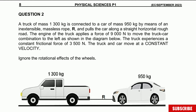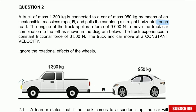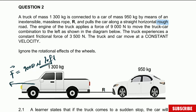We're starting with Question 2: a truck of mass 1,300 kg is connected to a car of mass 950 kg by means of an inextensible massless rope, and it pulls the car along a straight horizontal rough road — meaning there is friction. The engine of the truck applies a force of 9,000 Newton to move the truck and car combined to the left as shown in the diagram. I'll note the direction as left.